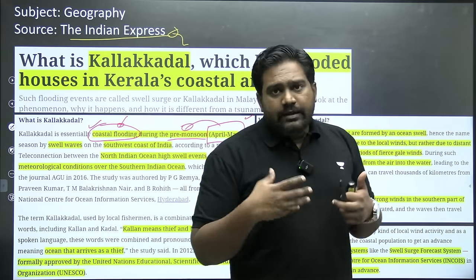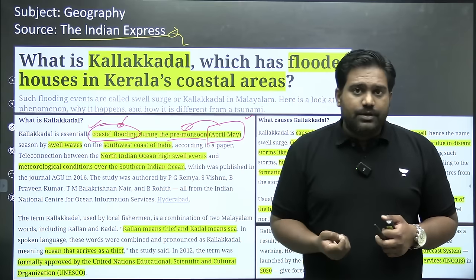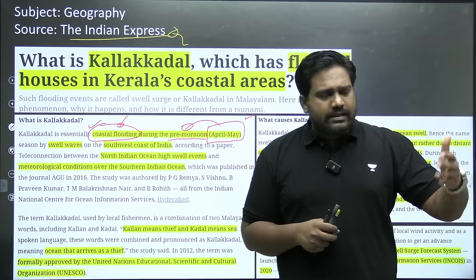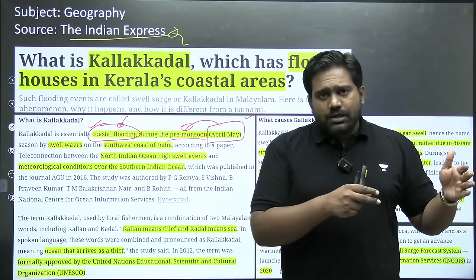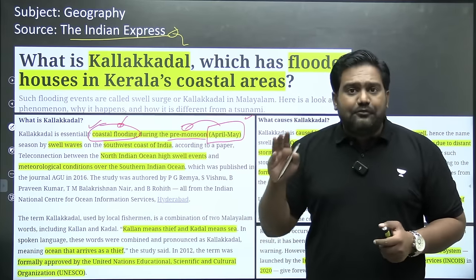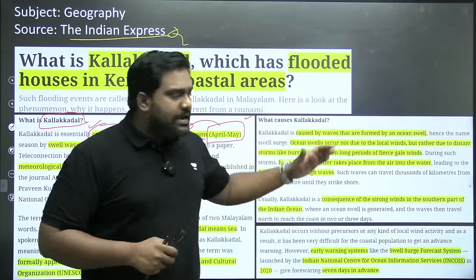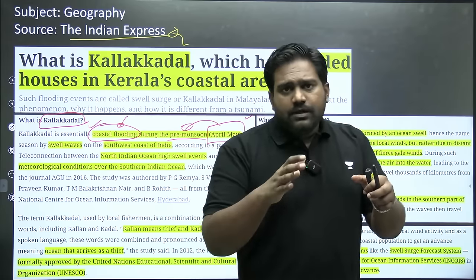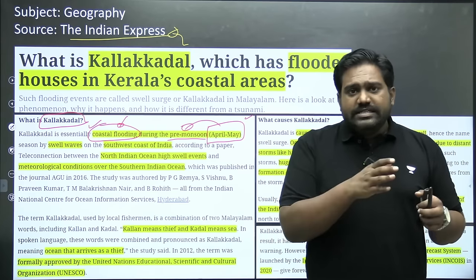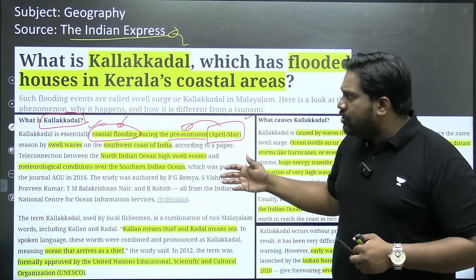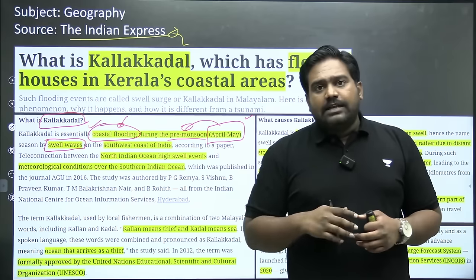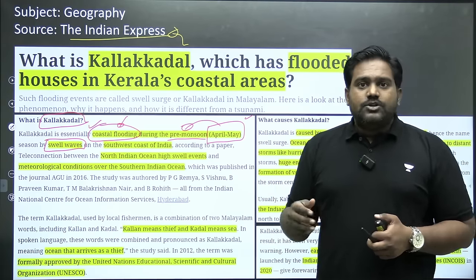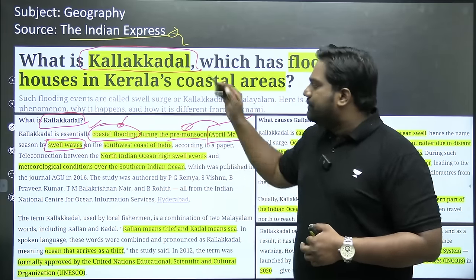The swell waves gush towards the coastline, causing significant damage to coastal villages and leading to coastal erosion. Tsunamis are entirely different geophysical events, occurring primarily due to underwater events like earthquakes, volcanic eruptions, or landslides. Kalakadal is a very different phenomenon — it results from wind activity and meteorological conditions present in the Indian Ocean right before the monsoon season. High-speed wind currents in the southern Indian Ocean build up in the pre-monsoon season, transferring energy to the water. In the northern Indian Ocean this results in swell waves or high tidal activity causing coastal flooding in parts of Kerala. The term is a Malayalam word made up of Kalan — meaning thief — and Kadal — meaning sea or coast.